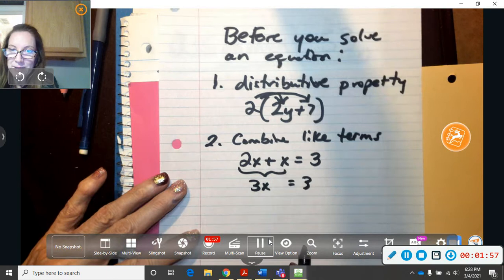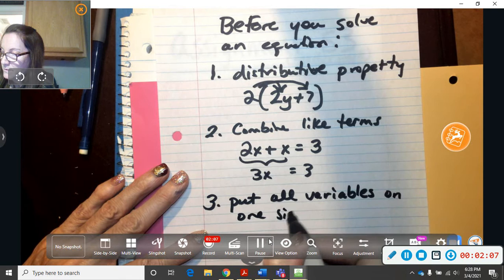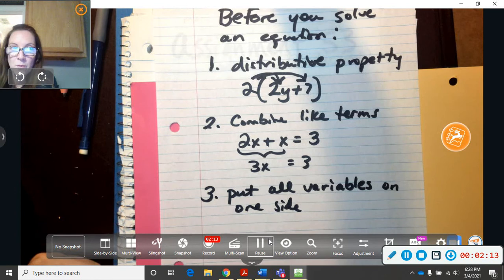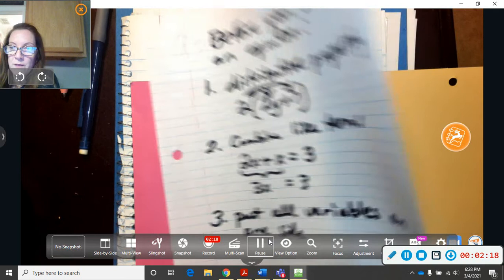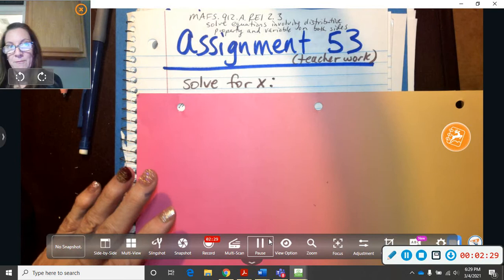But you're also going to have to put all the variables on one side. So you can't have x's on both sides of the equation, so you've got to move them all to one side. And whenever you move it, you do the opposite. So that's the things you have to do before you solve an equation. Remember, I used to have that written on this paper, but I looked at it at school. Okay, so I'm going to work with my problem. You're going to have to refer back to this if you have problems on yours.